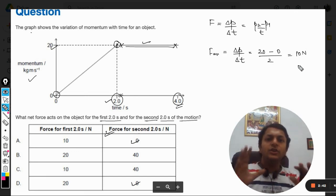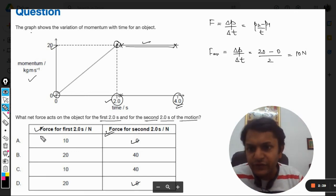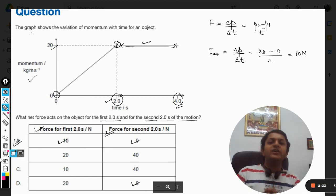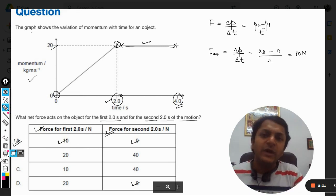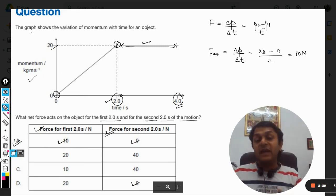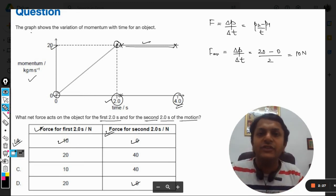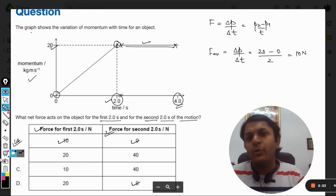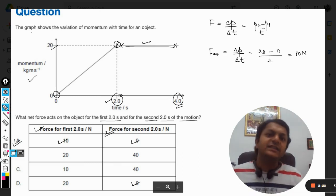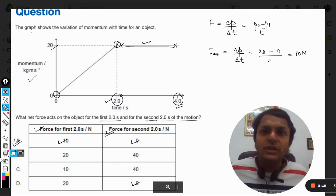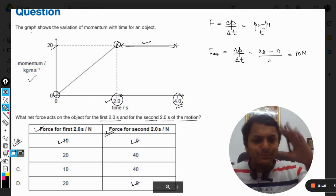It means that in the first part, for the first two seconds, 10 newtons is the correct answer, so A will be the right option. In the first part of the motion, the body is acted upon by 10 newtons, and in the second half of the motion, the body is not acted upon by any force. With this, I think it should be very clear to you. All the best, bye.